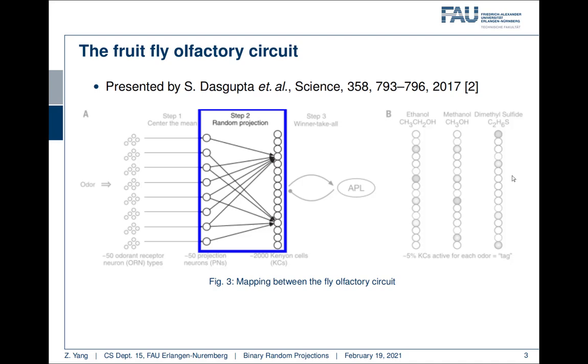For example, we have 50 projection neurons here and we randomly select 20 of them and then sum them up as a value for one of the kenyon cells. So here, the weights between the left layer and the right layer are binary, which means they are either 0 or 1.